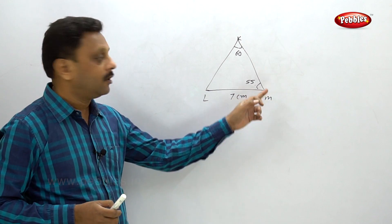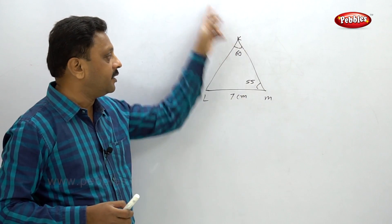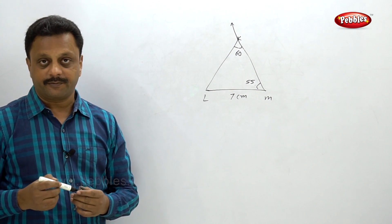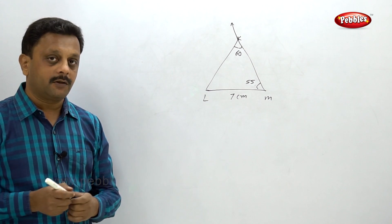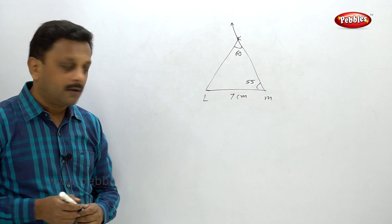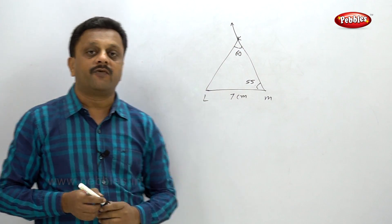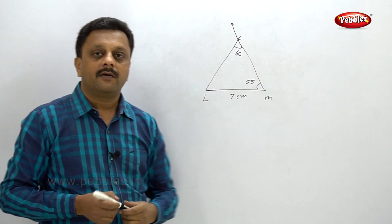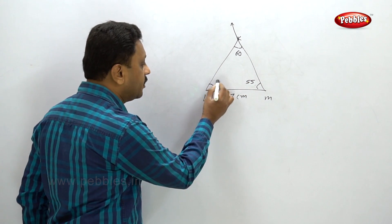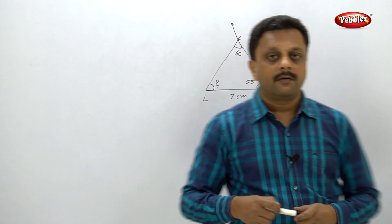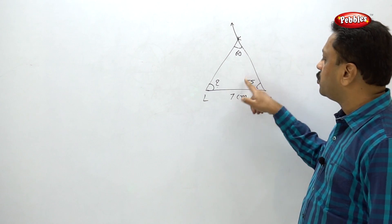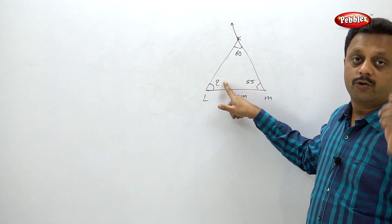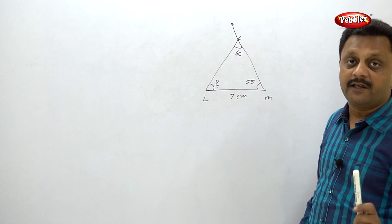You can draw the 7 cm base and the 55-degree ray from M, but these lengths are not given, so you cannot immediately locate point K. The solution is simple: since the sum of all angles in a triangle is 180 degrees, and angle K is 60 and angle M is 55, subtract these two from 180 to find angle L. That is why you should always draw a rough figure first before starting actual construction.